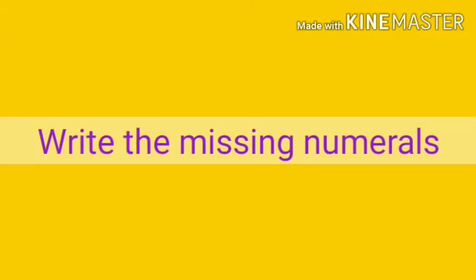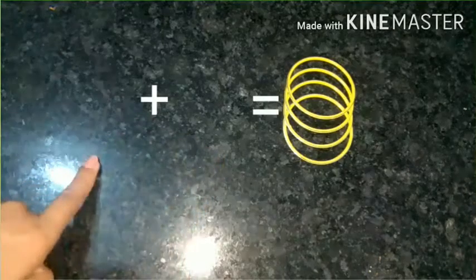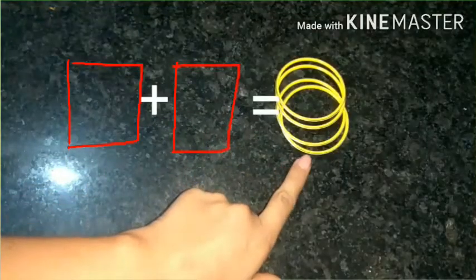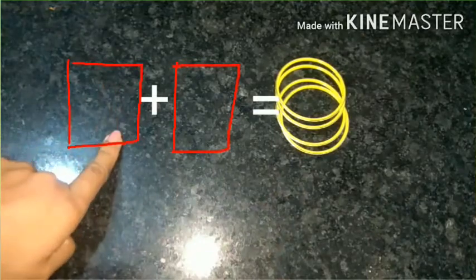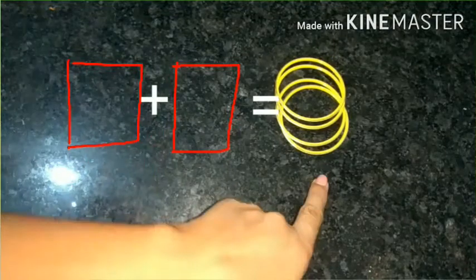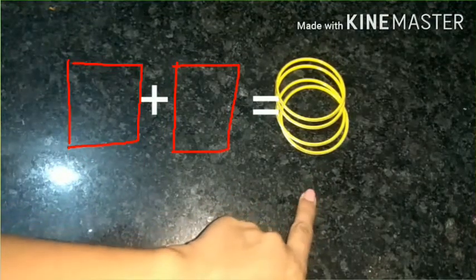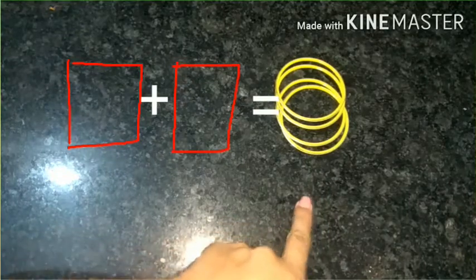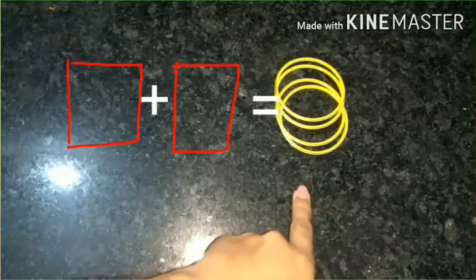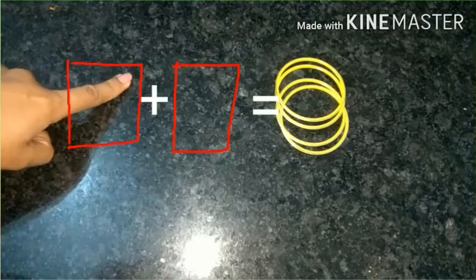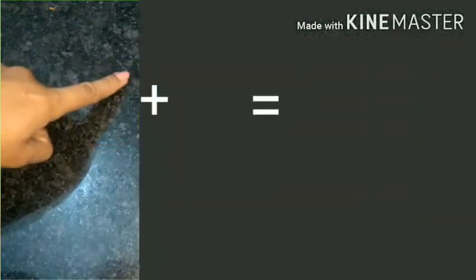Write the missing numerals. Here we have two boxes and total number of bangles are four. Here in the first box, we can write any number less than or equals to the total number of bangles. Here total number is four, so I can take number which is less than four.